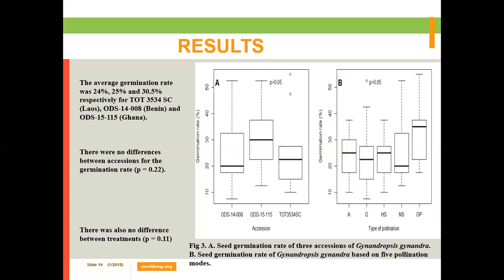When we observed the germination rate from the offspring of the different pollination types, we found they were quite low: 24% for the accession from Laos, 25% for the accession from Benin, and around 30% for the accession from Ghana. There was no significant difference between accessions or between treatments for the germination rate. The low germination rate in Gynandropsis gynandra is a significant problem, and storage time can also influence the germination rate for this species.